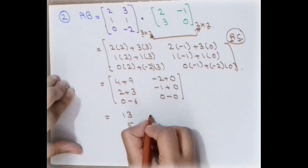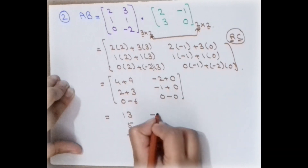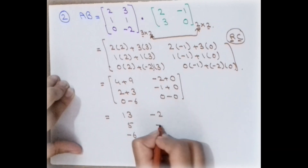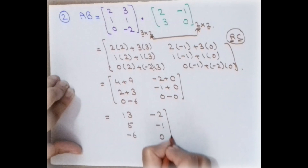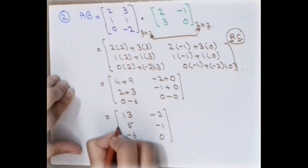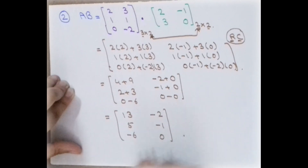So the result column is 13, 5, and −6 in one column, and −2, −1, and 0 in the other column. That is the final matrix for this second example.